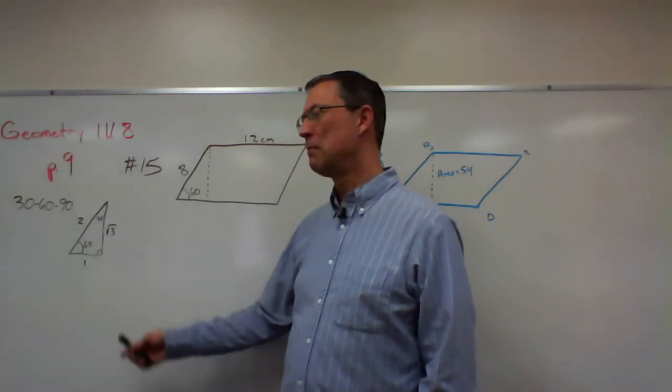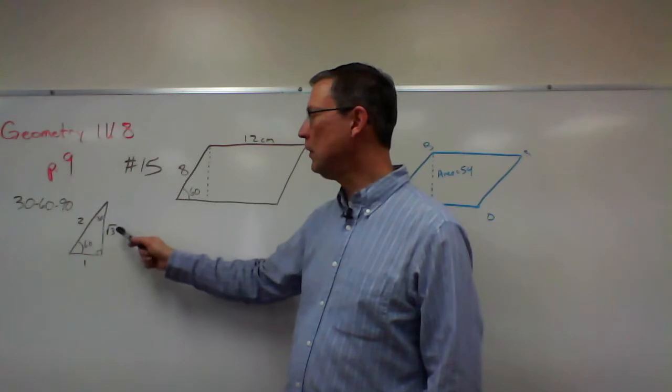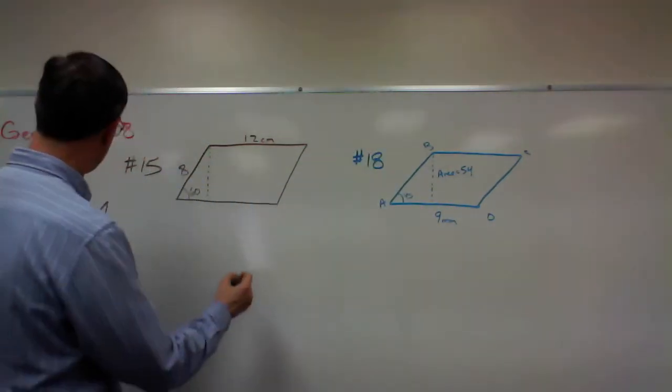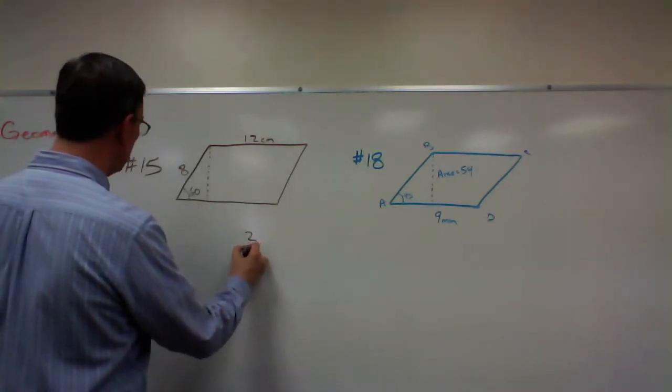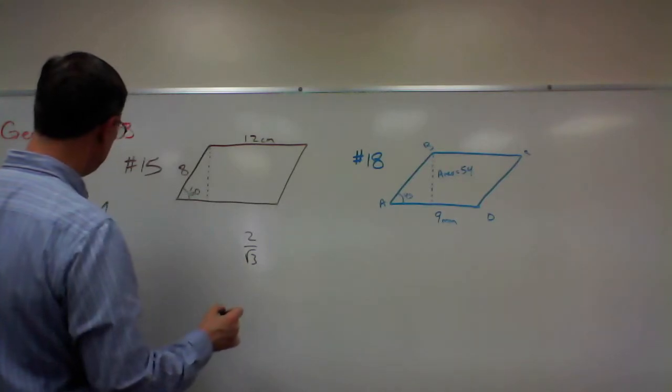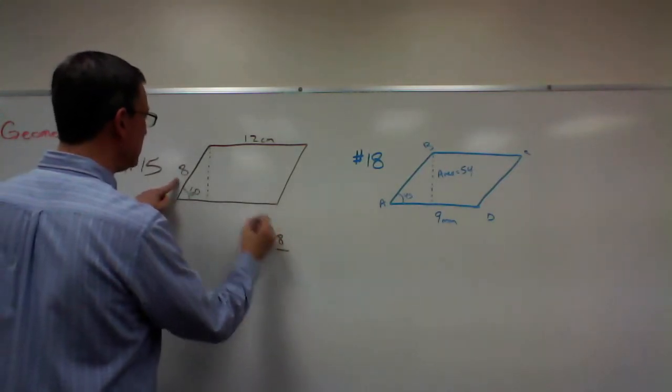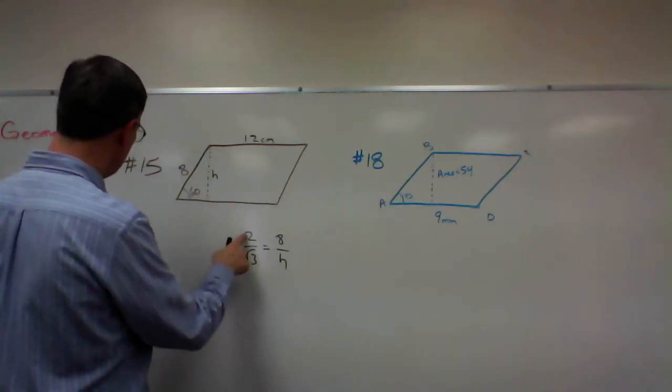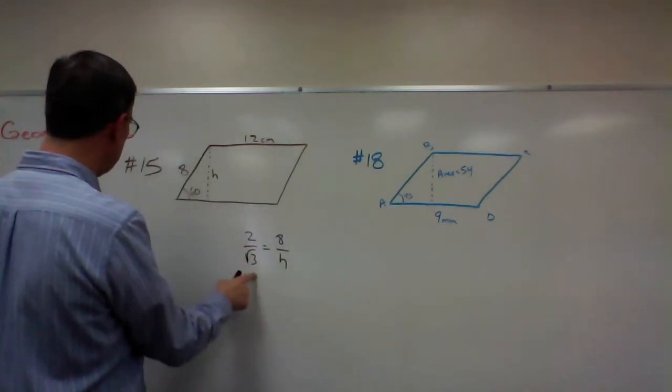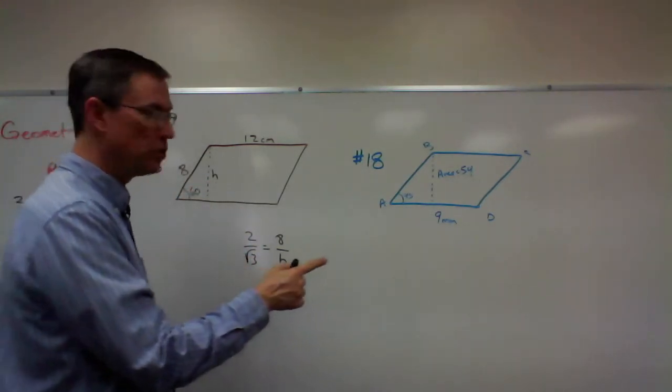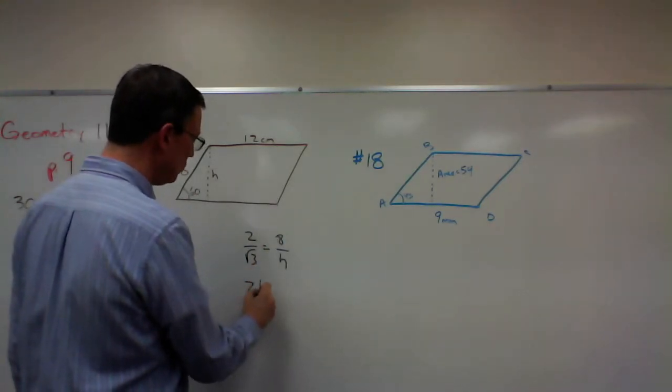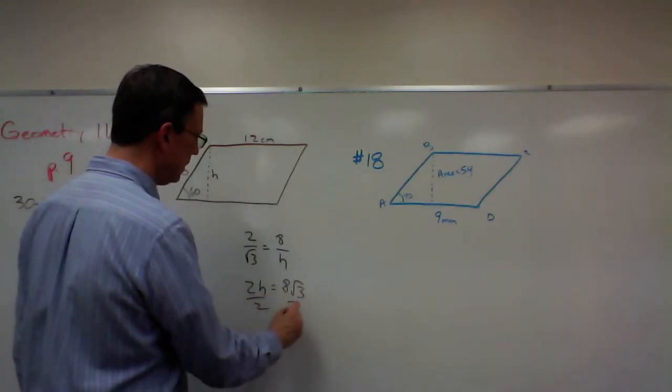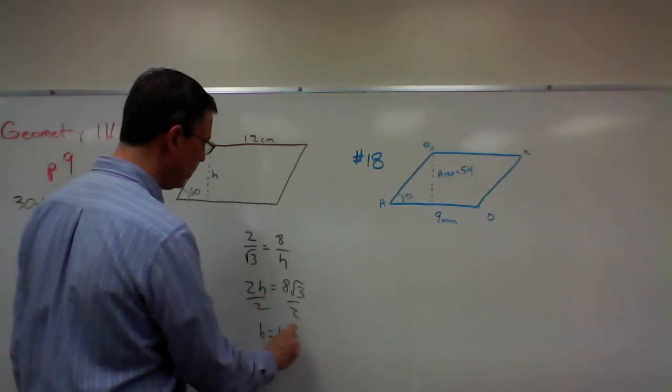Now we're going to set up a ratio of sides. So I can say 2 is to square root of 3 as 8 is to the height, because the height is what I'm solving for here. So 2 is to square root of 3 as 8 is to the height. Now to solve it, we're going to cross multiply. So 2h equals 8 square root of 3. Divide by 2, so h is 4 square root of 3.